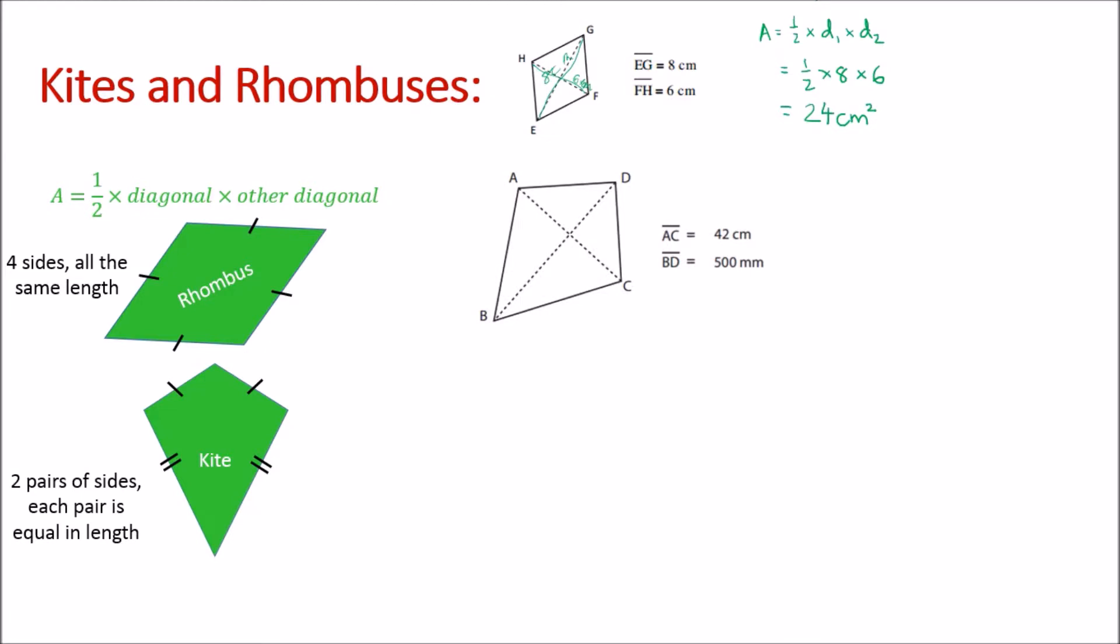This is our second example. We're being shown AC from here to here is 42 centimeters, and BD from here to here is 500 millimeters. Notice these are not the same units, so let's change this one to being in centimeters, and that's going to be 50 centimeters.